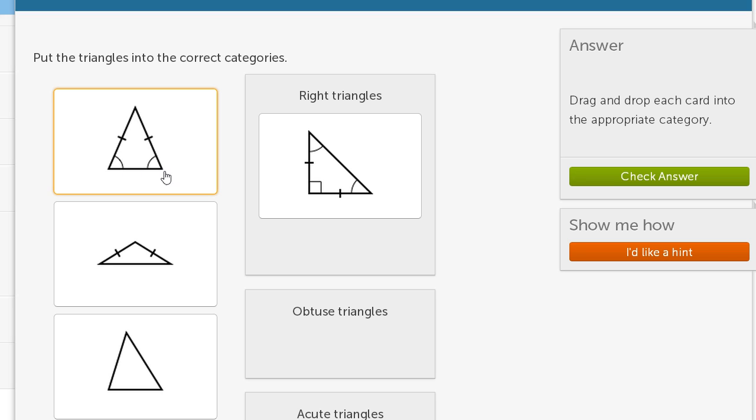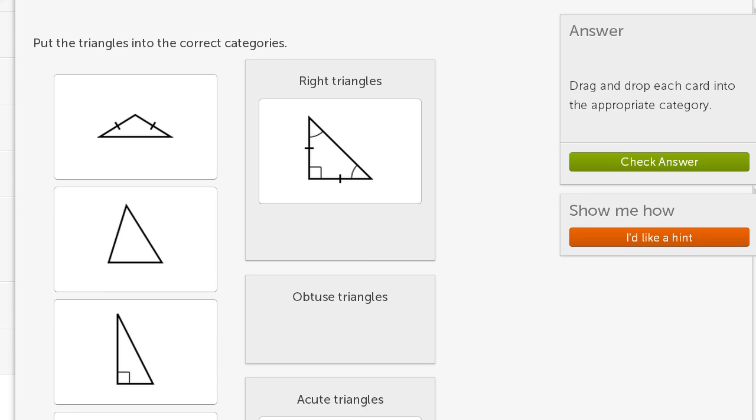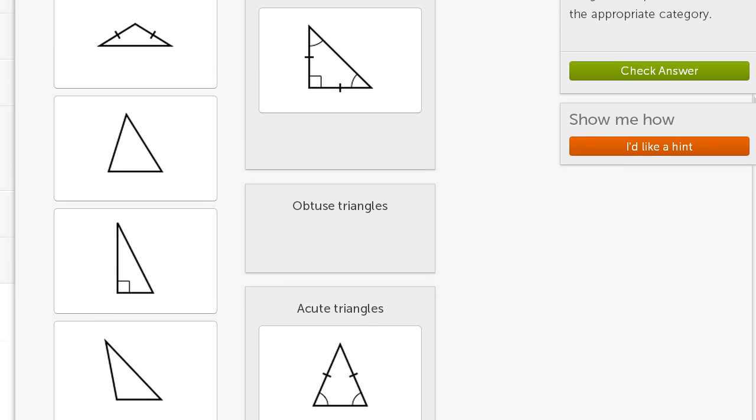This one right over here. All of these angles are less than 90 degrees. Just eyeballing it. So this is going to be an acute, that's going to be an acute triangle. I'll put it under acute triangles right over there.